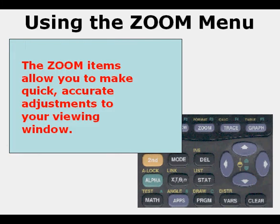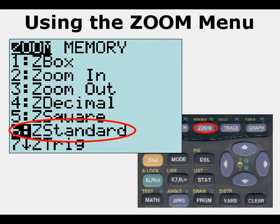The zoom items allow you to make quick, accurate adjustments to your viewing window. And we're going to start out with zoom 6, which is zoom standard.